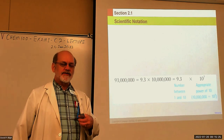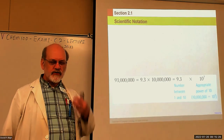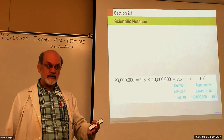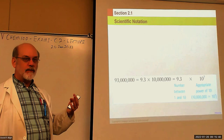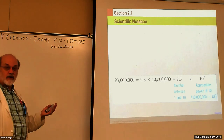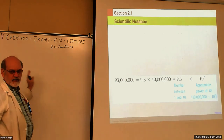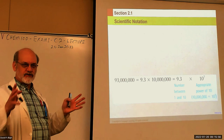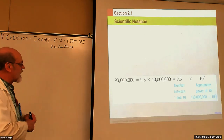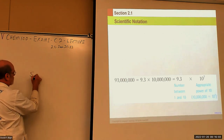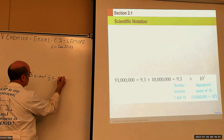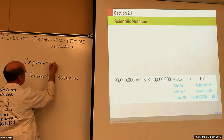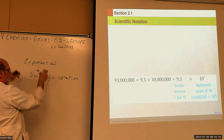Some measurements are huge, and some are extremely small. If we use standard decimal notation, our big numbers could cover the whole board. So the system we've devised to be more efficient is called scientific notation. Scientific notation is actually a subset of exponential notation.